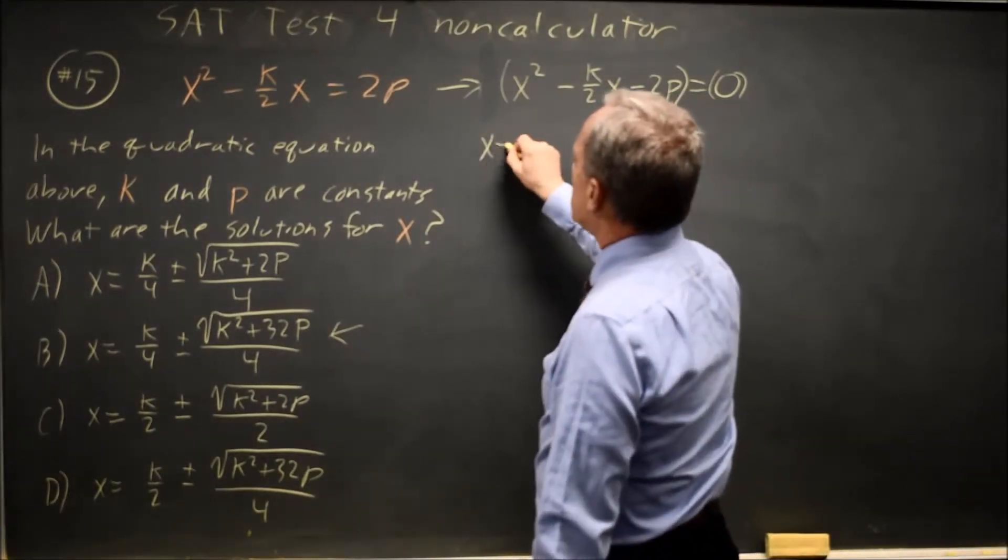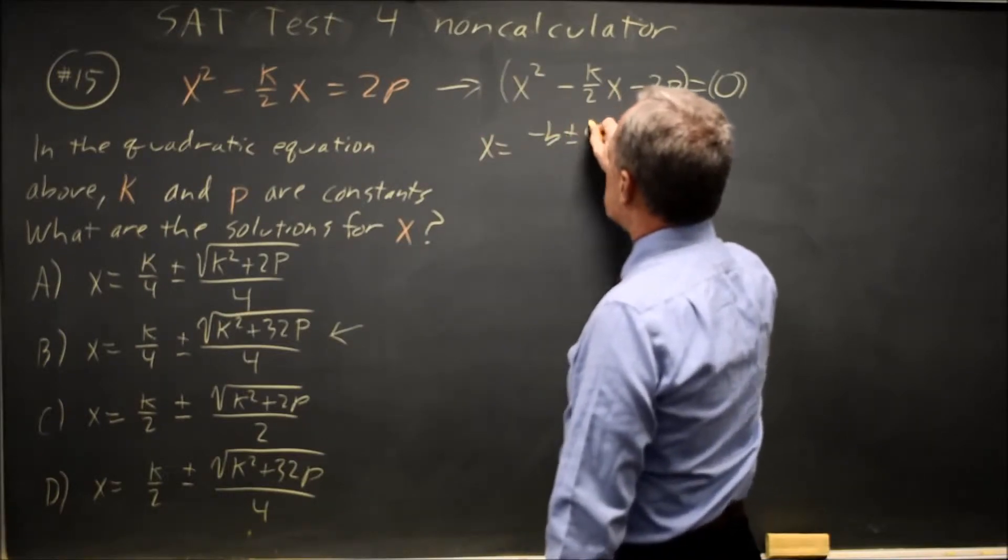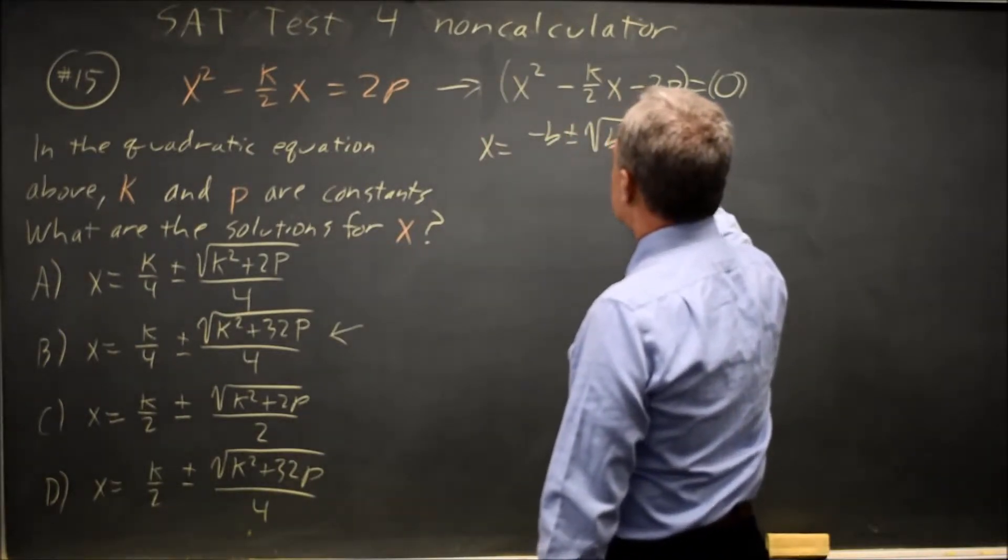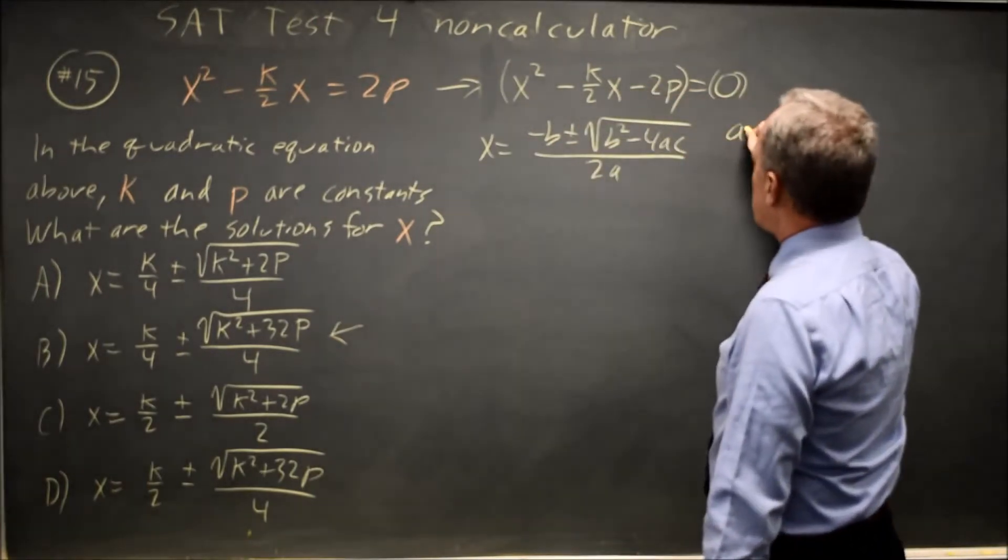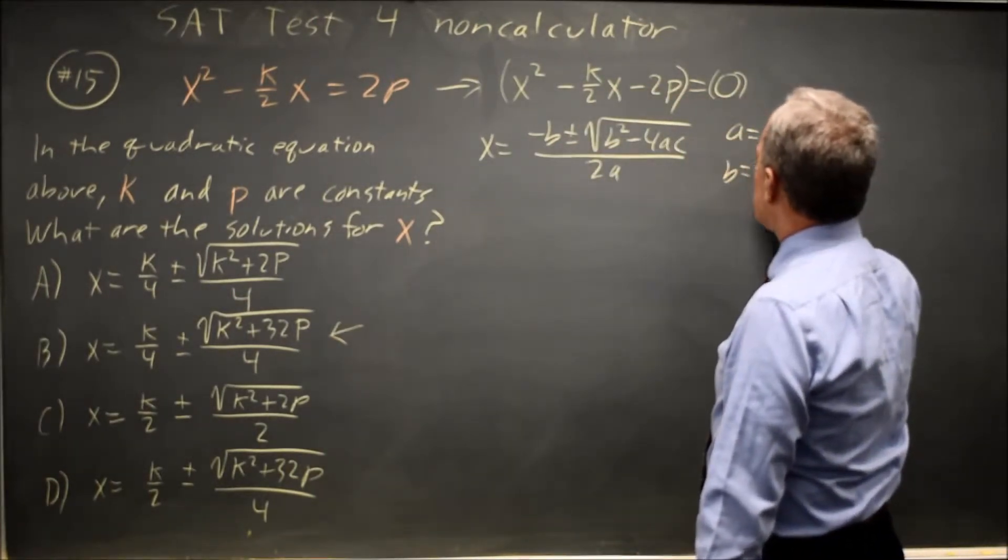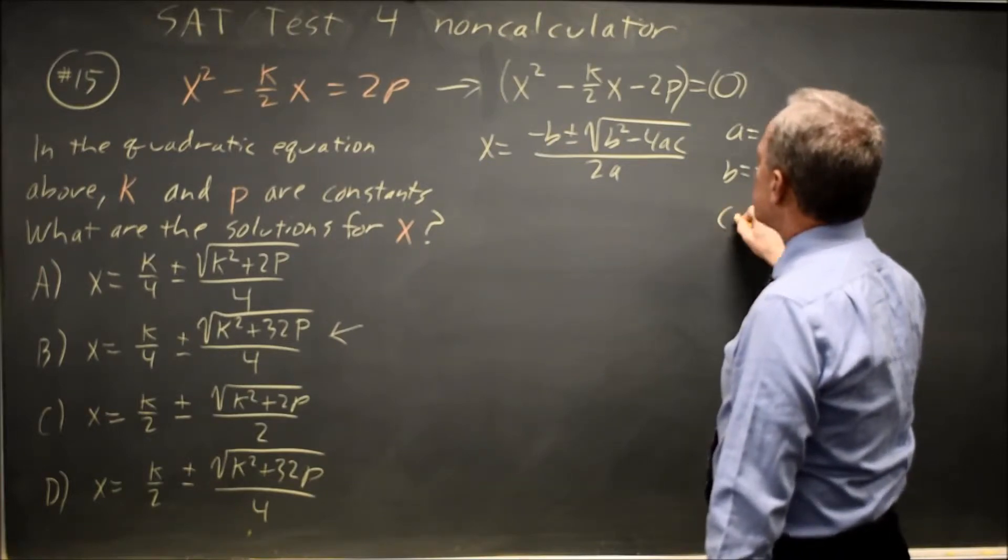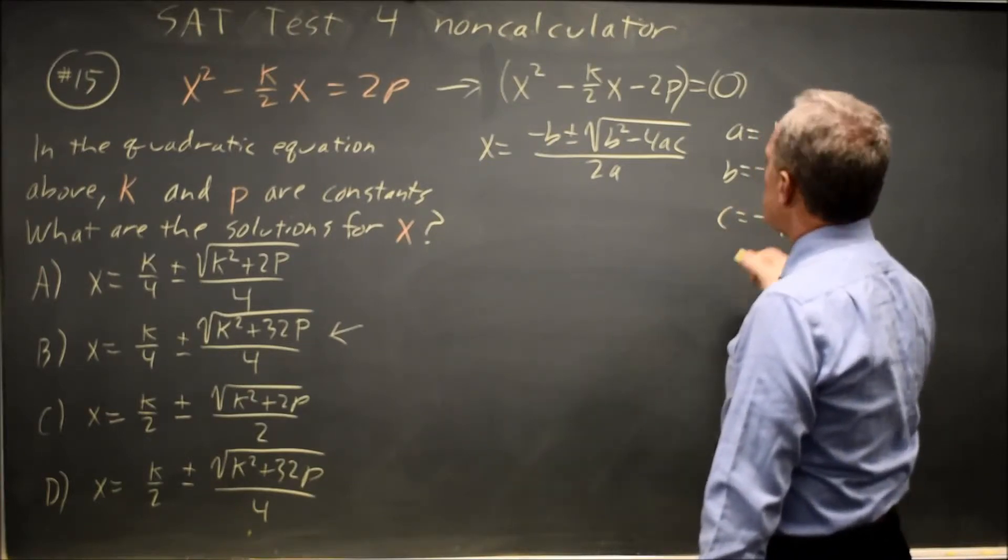That gives me x equals negative b plus or minus square root b squared minus 4ac all over 2a, where a equals 1, b equals negative k over 2, and c equals negative 2p.